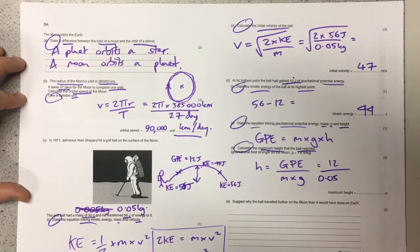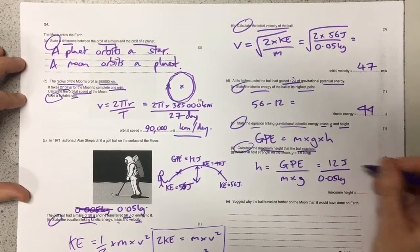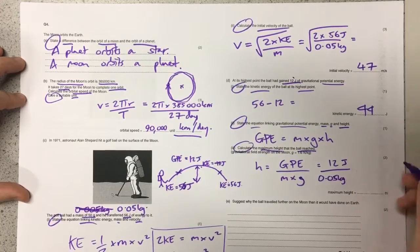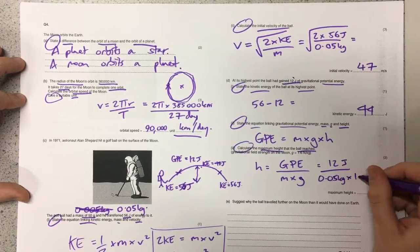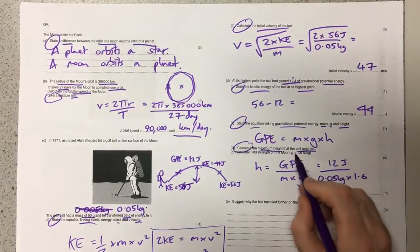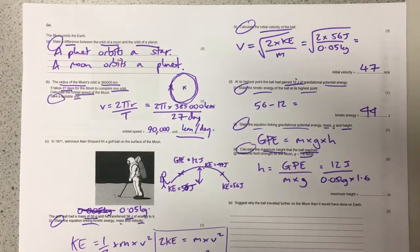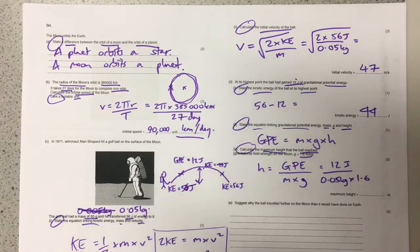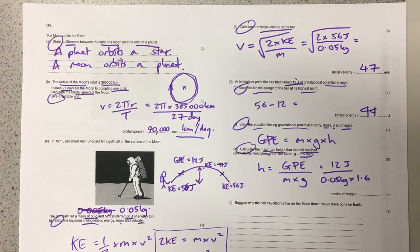The maximum GPE was 12 joules, and then we're going to divide it by the mass, again making sure that we use kilograms. Then g on the moon is 1.6 and not 10 as we might see on Earth. Then we put that all into a calculator and we should get it comes out as 150 meters.